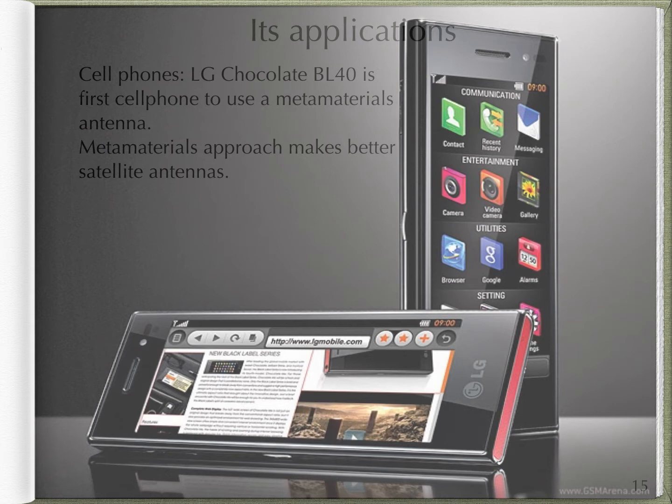All these advantages of metamaterial antennas make their use more beneficial than regular antennas. The first cell phone to use a metamaterial antenna is the LG Chocolate BL40. These metamaterial antennas also make better satellite antennas.